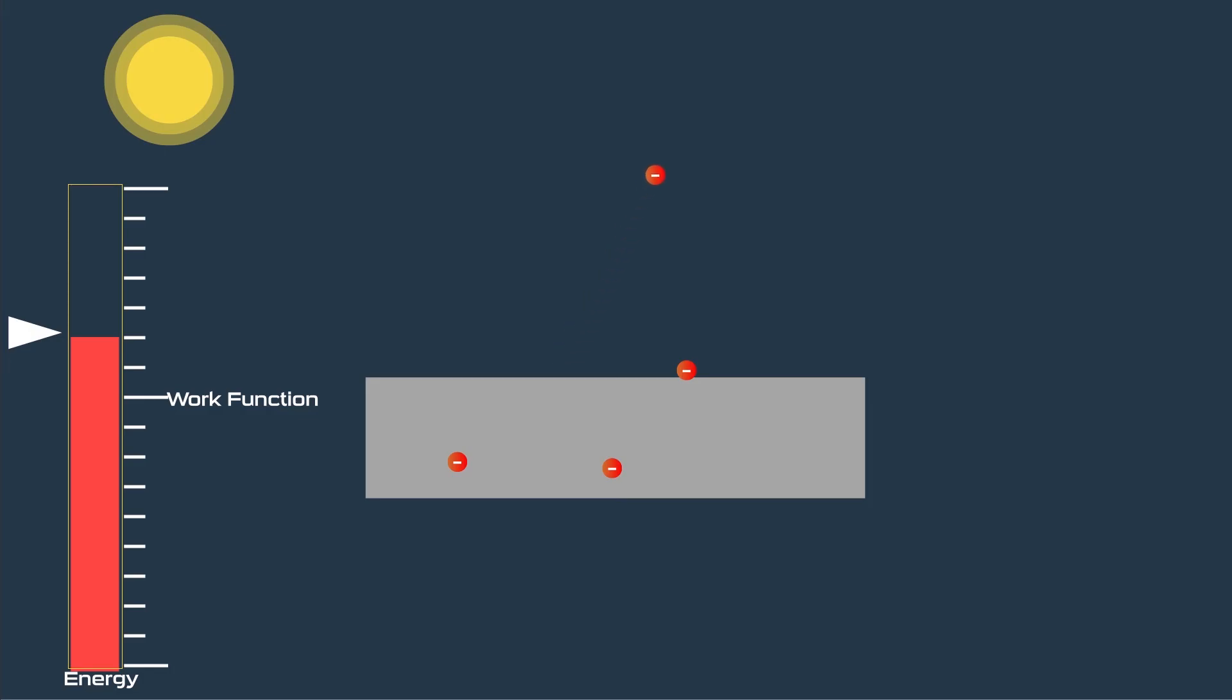This kinetic energy of electron depends on the frequency of photon. The higher the frequency of photon than threshold value, with the more energy electron will eject.